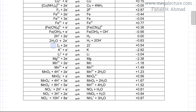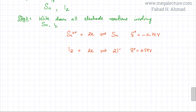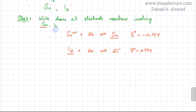I'm going to mark this electrode as well because it contains I₂, and there are no other electrodes in the data booklet where iodine is involved. So I've identified two electrode reactions — one involving tin and one involving iodine — and I'm going to copy those two electrode reactions down.